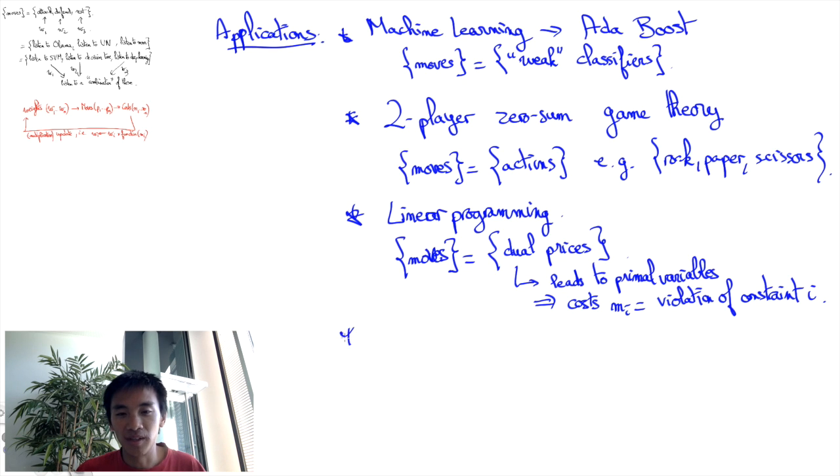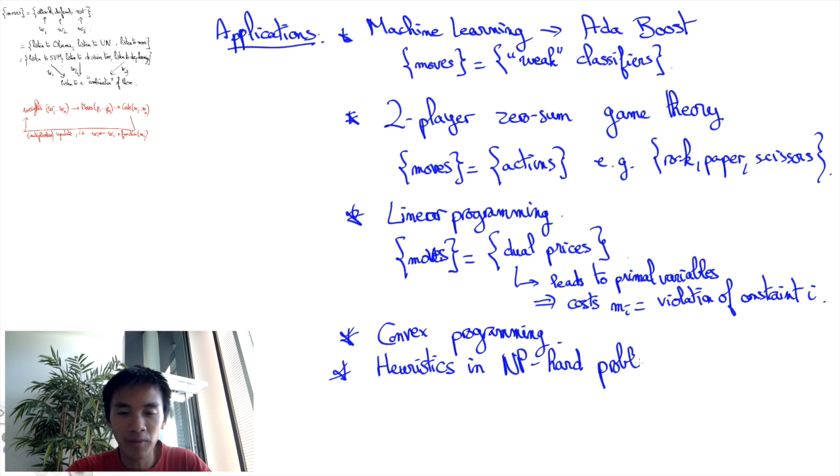Moreover, this can be generalized almost straightforwardly to convex programming. The Multiplicative Weights Update Algorithm has also been found to be useful to provide heuristics for some NP-hard problems. In some settings, you can even prove that you have remarkable theoretical guarantees on optimality gaps.